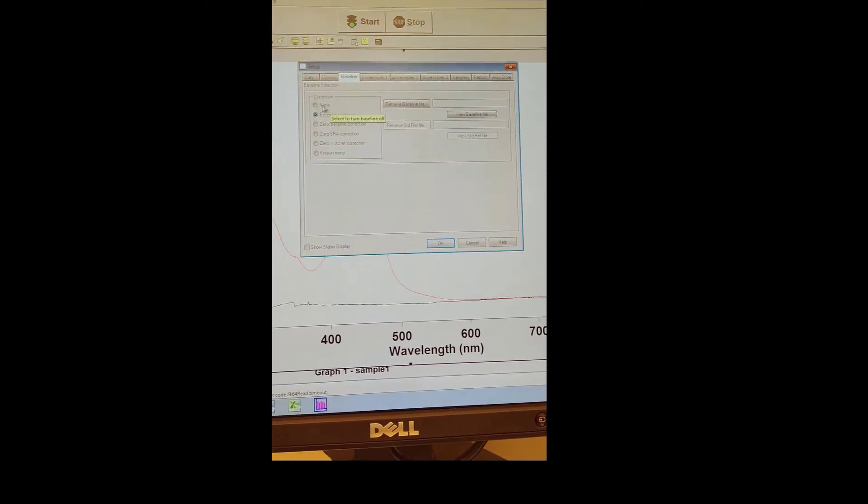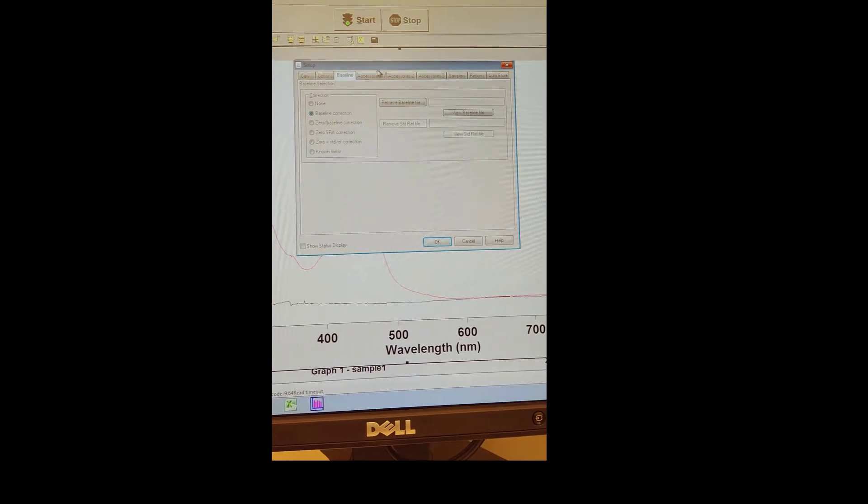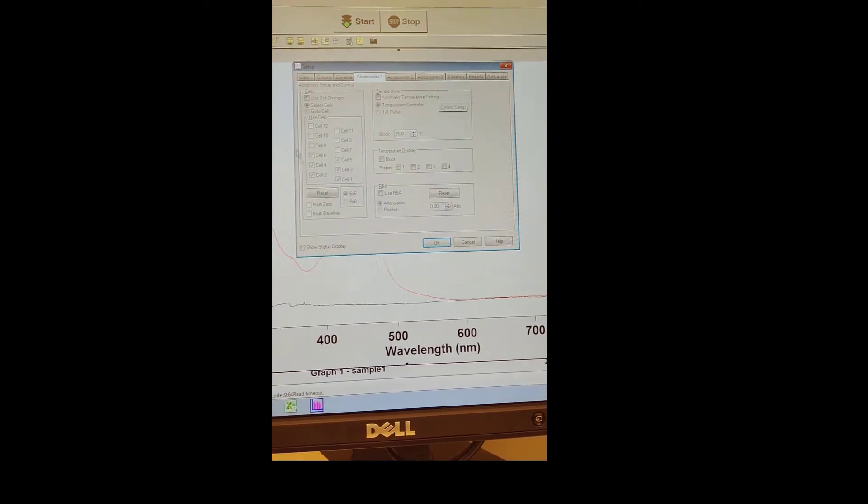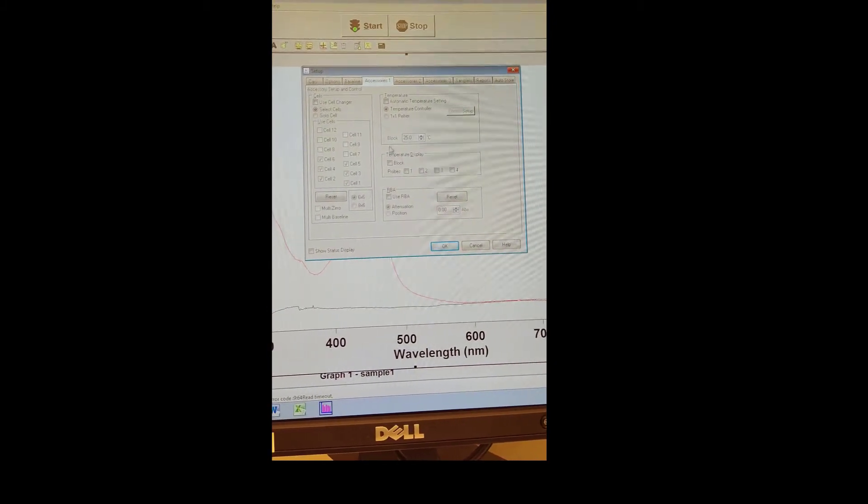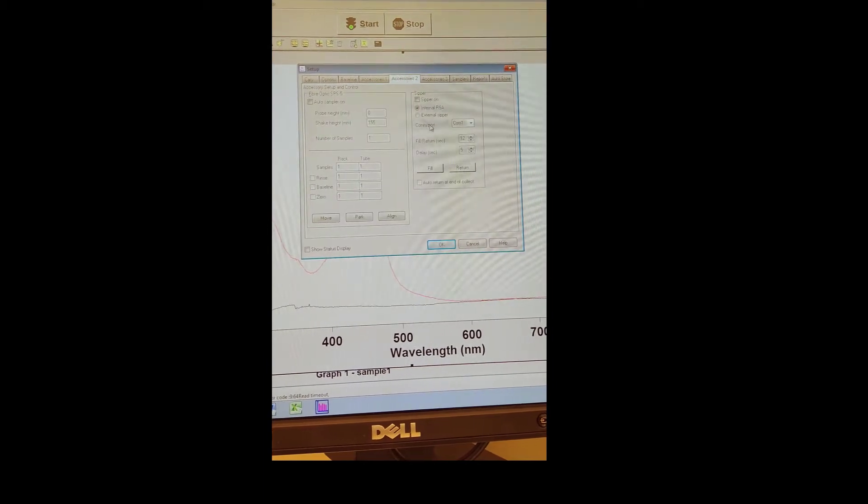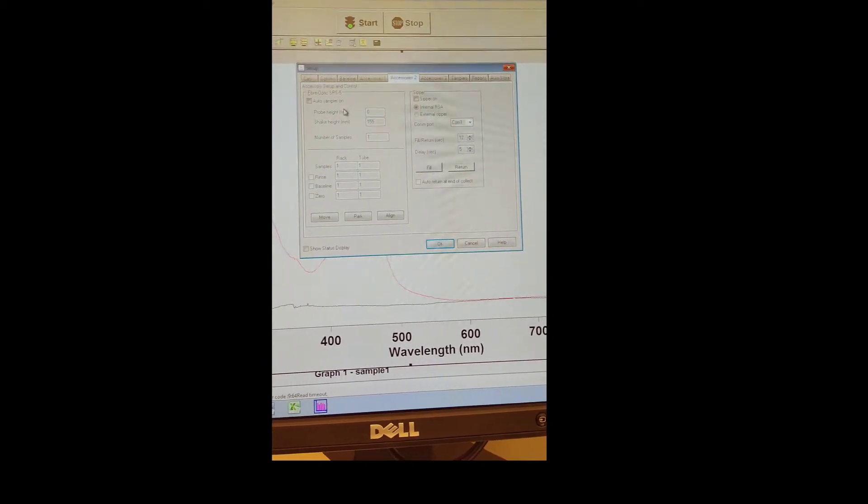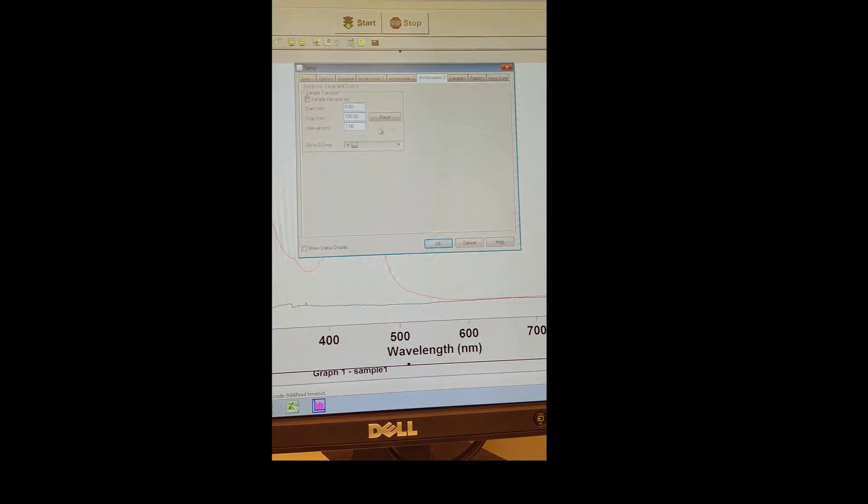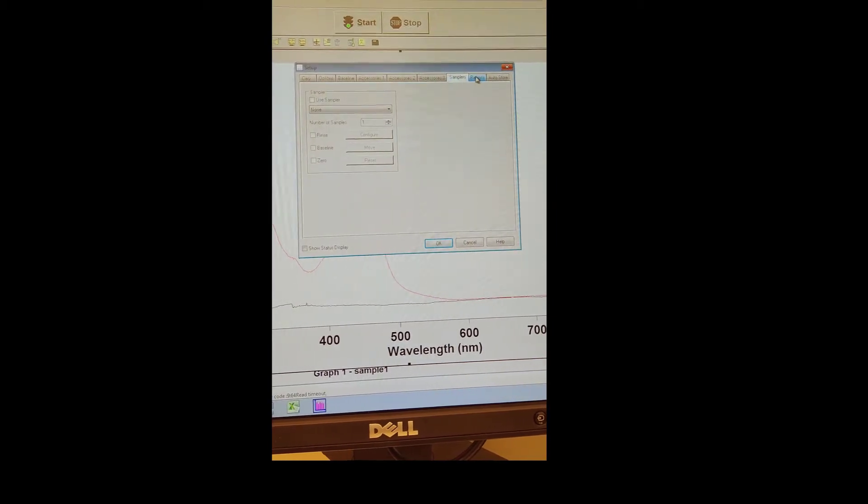Under Baseline, make sure Baseline Correction is selected. For Accessories 1, 2, and 3, make sure that nothing underneath those tabs is selected, because currently there are no accessories hooked up to the instrument.